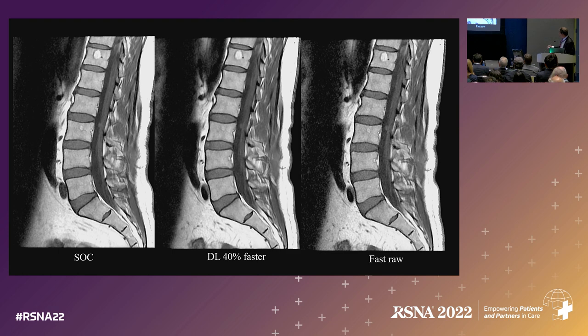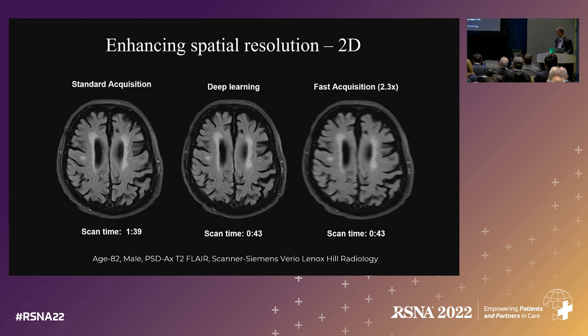Here you see the same thing with T1 — standard of care, a fast image with routine reconstruction showing all that salt and pepper in the noise pattern. Without that noise, processed with SubtleMR, you get an image that looks very much like the routine sequence.